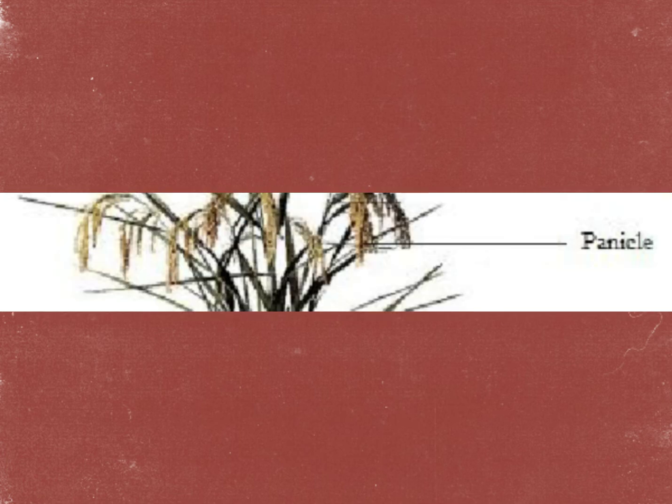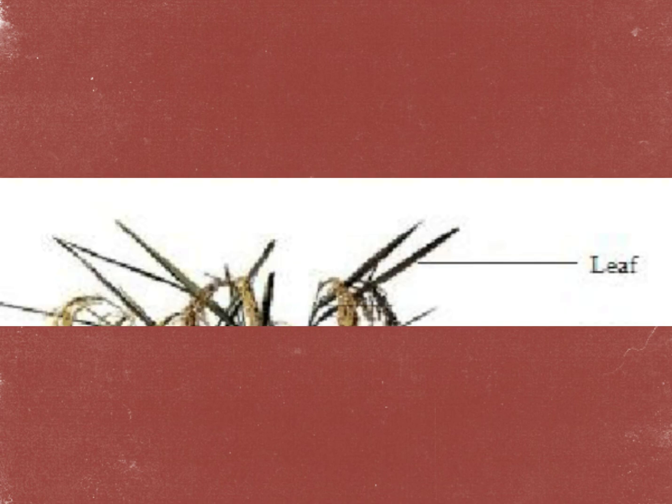The panicle is borne on the uppermost internode of the culm. The panicle base is the nearly solid node between the uppermost internode of the culm and the axis of the panicle. The region above the panicle base is known as the neck. The last leaf wrapping the panicle is called the panicle leaf or flag leaf.